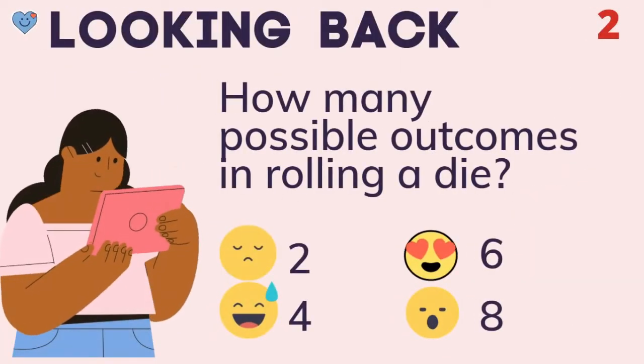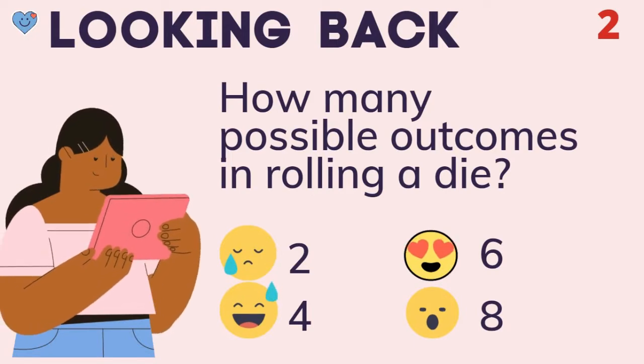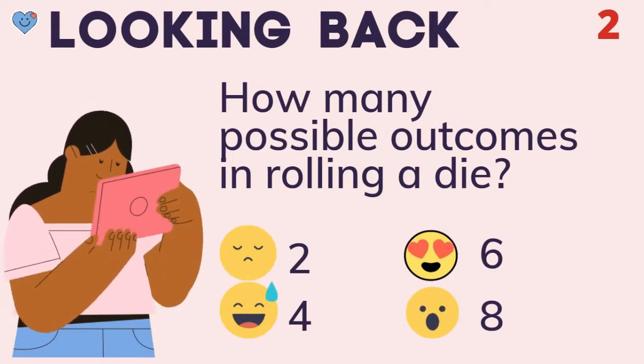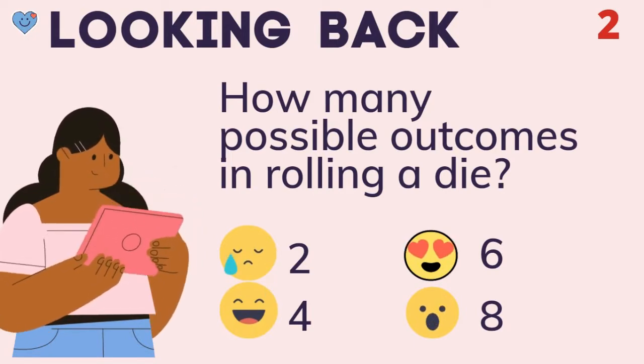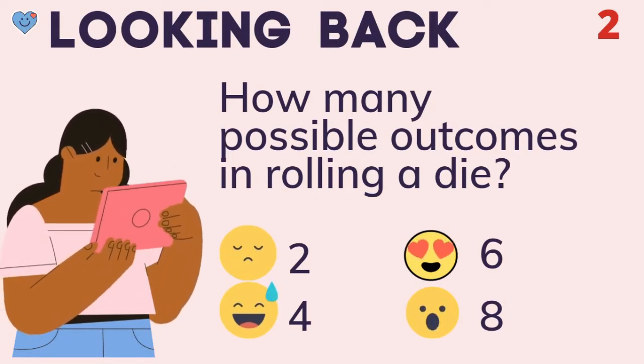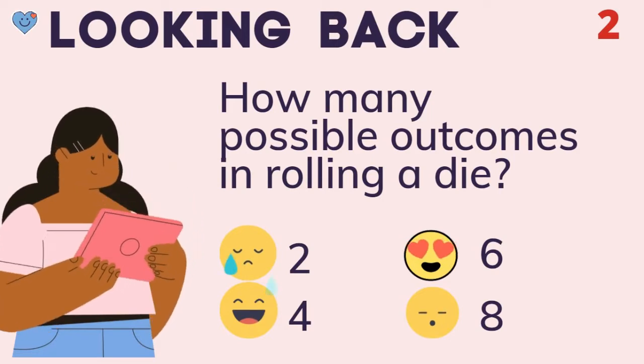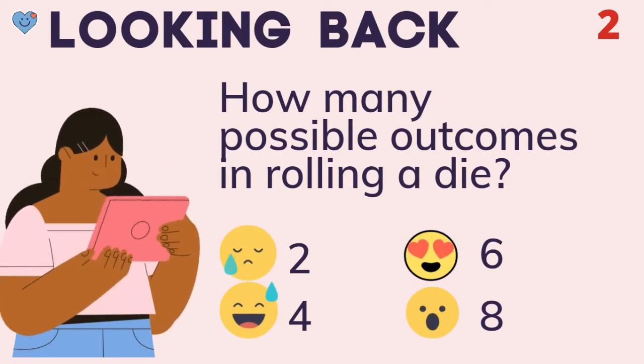Next, how many possible outcomes are there in rolling a die? The choices are 2, 4, 6, or 8. The correct answer is 6.